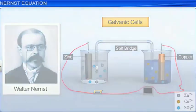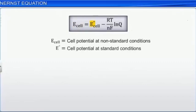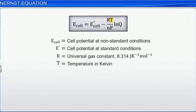The Nernst equation shown here allows us to calculate cell potential at non-standard conditions. E-cell is the cell potential at non-standard conditions. E-not is the cell potential at standard conditions. R is the universal gas constant and T is the temperature in Kelvin.